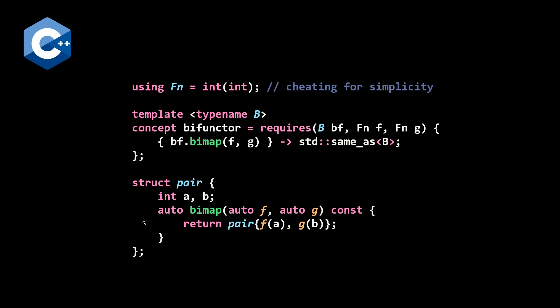And so if we define our struct pair, we have two members a and b, and then we have bimap that's defined to take f and g. And we are just going to apply f to a and g to b, and then construct a new pair and return this and we're done. So this is pretty cool that we get to use C++ 20's concepts in order to answer this challenge.